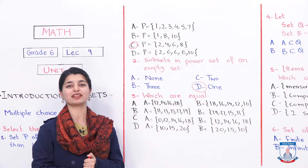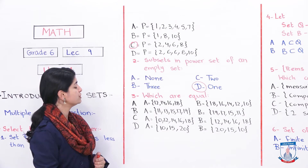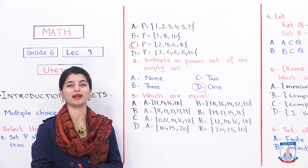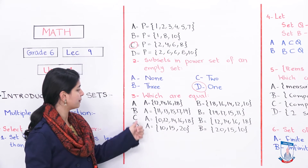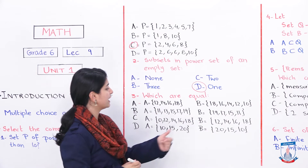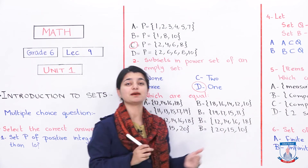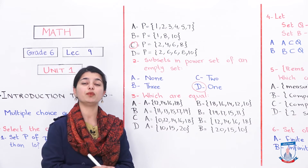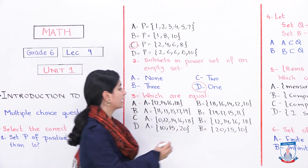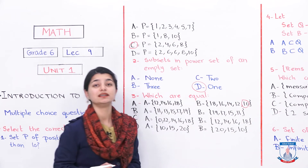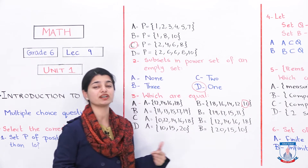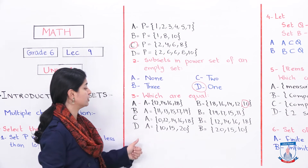For the third MCQ, we are given sets A and B in four options and must identify which pair are equal sets. First, it is important to understand that equal sets must have all the same elements. Option A has A = {12, 14, 16, 18} and B = {18, 16, 14, 12, 10}. The number 10 is in B but not in A, so they do not match — option A is cancelled.